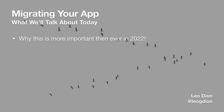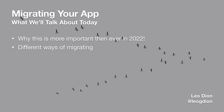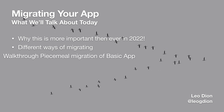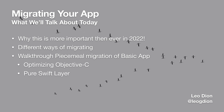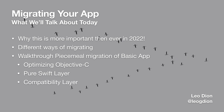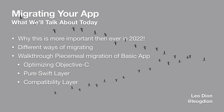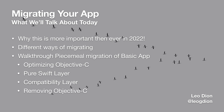I want to talk about why it's more important than ever in 2022 to start doing this. We'll cover different ways of migrating your app, walk through a piecemeal migration of a basic app — including optimizing your existing Objective-C code, creating a pure Swift layer, and creating a compatibility layer between the old Objective-C code and your new Swift code. Then lastly, we'll talk about finally removing some of that Objective-C code from your application.